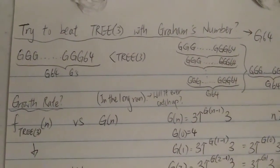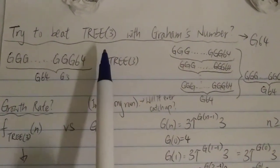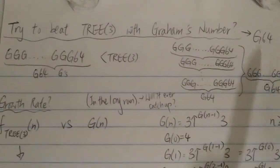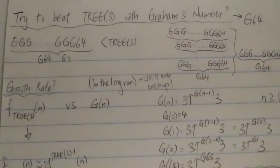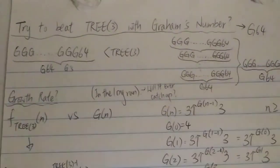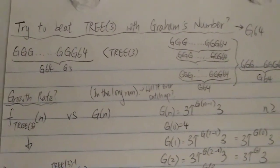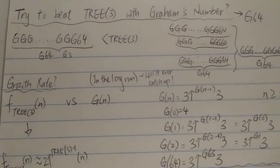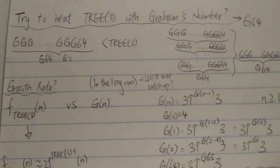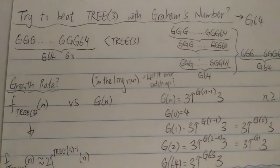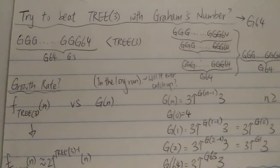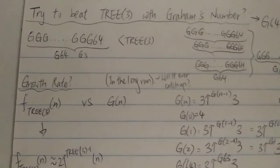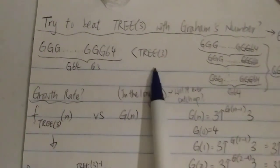Hi everyone, so today we're gonna try to beat 3↑↑↑3 with Graham's number once again. I know in the past I have tried to make videos about whether Graham's number can beat 3↑↑↑3, and every single time it failed. That's because 3↑↑↑3 is just so much bigger than Graham's number. Here's a quick example.